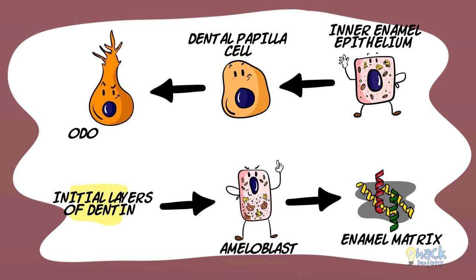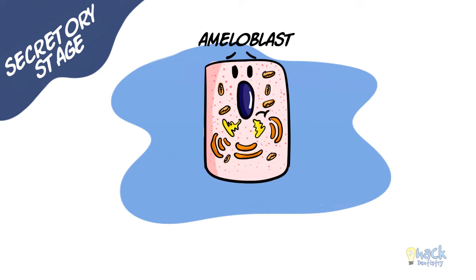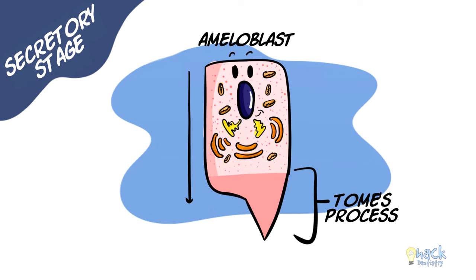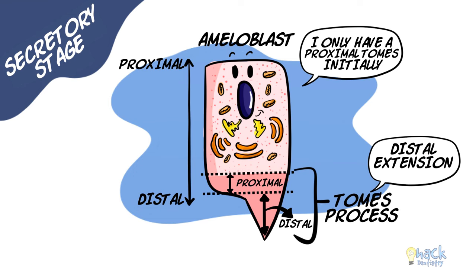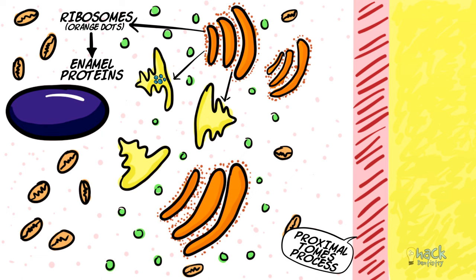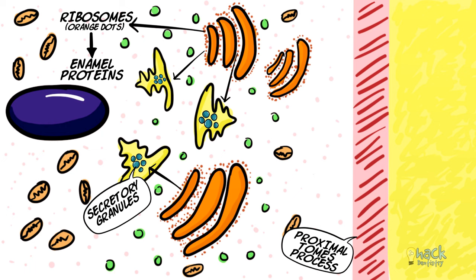In the secretory stage, ameloblasts develop a structure called the Tomes' process. A fully developed Tomes' process is a distal extension or projection of the ameloblast consisting of a proximal portion and a distal portion. However, at the beginning of the secretory stage, the Tomes' process has only a proximal portion. Ribosomes help in synthesizing proteins, which are then packaged into secretory granules in the Golgi complex. These secretory granules containing enamel proteins are then secreted via the Tomes' process.